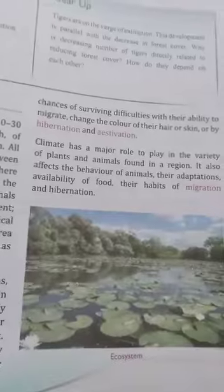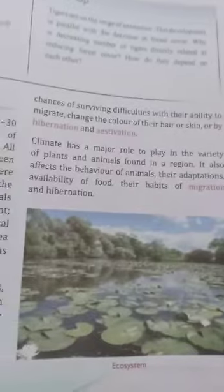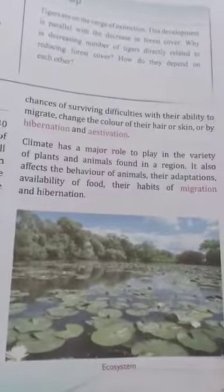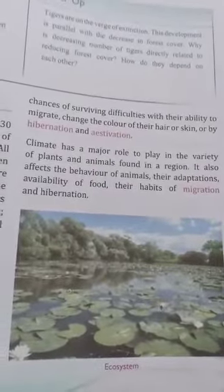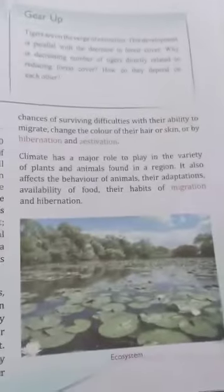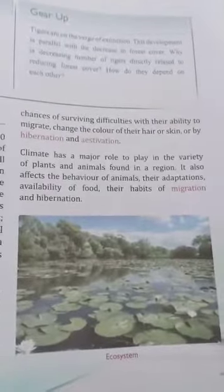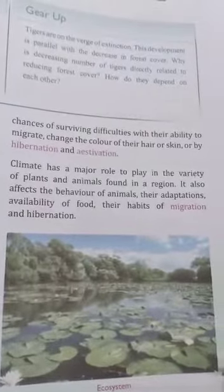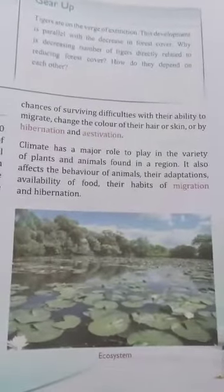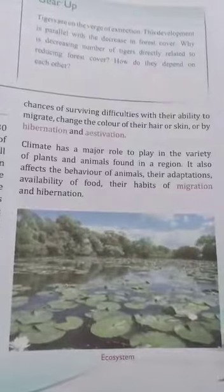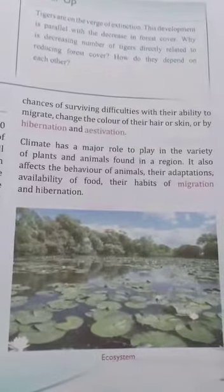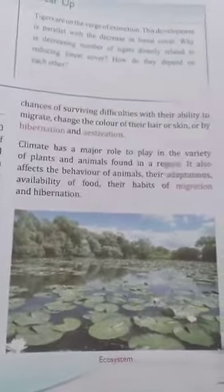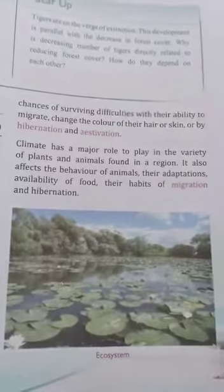Hibernation means long winter sleep by some animals — for example, snake, lizard, etc. Estivation means long summer sleep of some animals — for example, crocodiles, frogs, earthworms, etc. Climate has a major role to play in the variety of plants and animals found in a region. It also affects the behavior of animals, their adaptations, availability of food, and their habits of migration and hibernation.